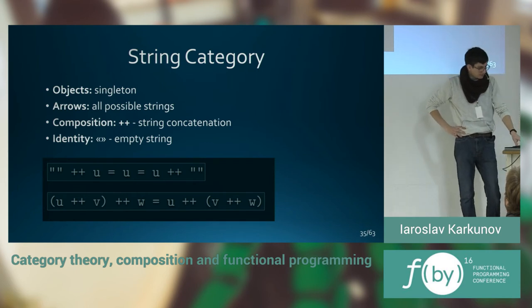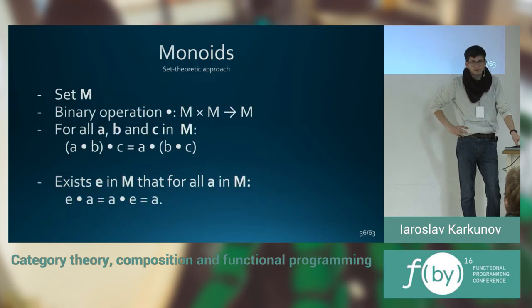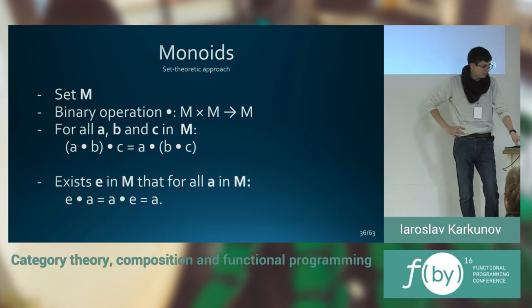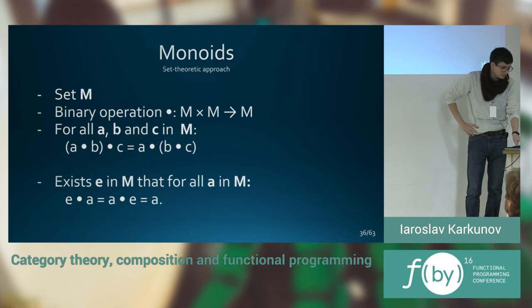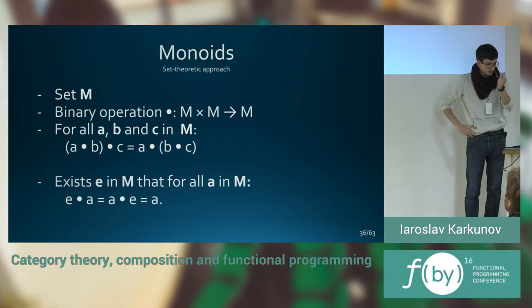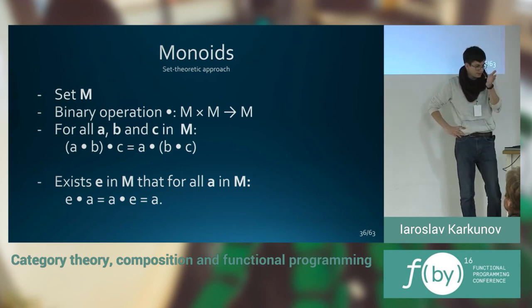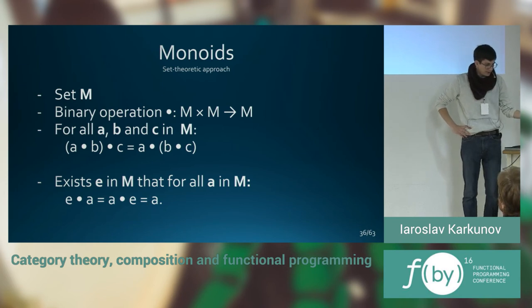In mathematics, those structures, strings, integers with multiplication and one, and also addition and zero, are called monoids. Monoids are very applicable in programming. And from the set theoretic approach, it's like just a set with binary operation in it, which is associative. And also, there exists some natural identity element, that for all A in M, we have the identity property.